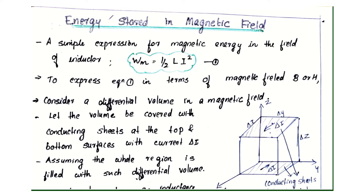Dear students, next topic: energy stored in a magnetic field. We are going to derive the expression for energy stored in a magnetic field. A simple expression for magnetic energy in the field of an inductor is Wm = ½LI². This is equation number 1.